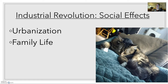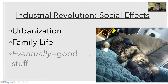First, urbanization — lots of folks moved to cities. What did that do to daily life? Next up, families. The family unit changed: how many kids you had, when you got married, who you married. And I labeled this 'eventually good stuff.' A lot of the social effects were negative at first, but ultimately they led to something better than we had before.